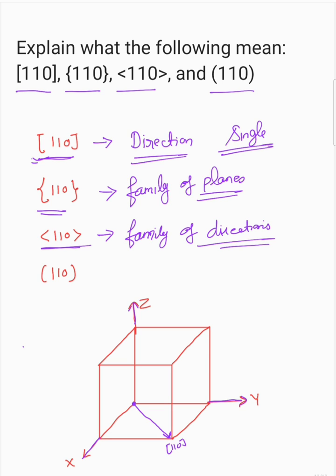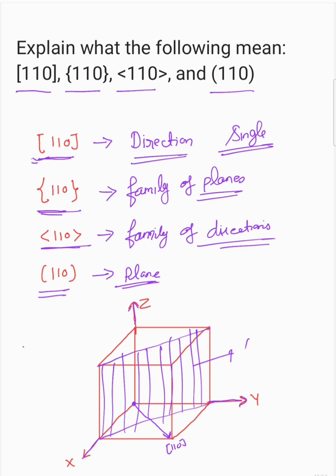This is the family of directions, this is the family of planes. Now if you have an open bracket like (110), this will correspond to the plane, a single plane like 110 plane. So if you have to draw this 110 plane here, it will be somewhere this plane. This shaded region is 110 plane when you are considering this as the origin point.